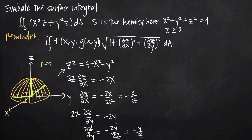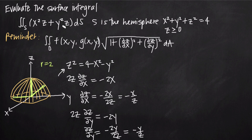Now we have the partial derivatives to plug into the square root in the surface integral formula. We write the double integral of x squared z plus y squared z, multiplied by the square root of 1 plus (negative x over z) squared plus (negative y over z) squared, which simplifies to the square root of 1 plus x squared over z squared plus y squared over z squared. Finding a common denominator of z squared, the expression under the square root becomes (x squared plus y squared plus z squared) over z squared.